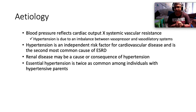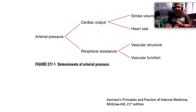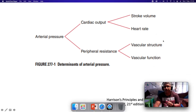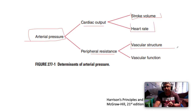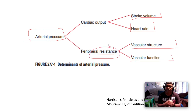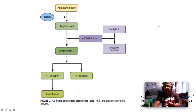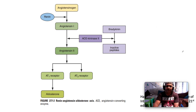Essential hypertension is twice as common among people whose parents also have hypertension. Arterial pressure is the product of cardiac output and peripheral vascular resistance. Cardiac output is further composed of stroke volume and heart rate, and peripheral resistance by vascular structure and vascular function. The main players contributing to vascular resistance are our arterioles — the high-resistance vessels. This is underpinned by the renin-angiotensin-aldosterone system.